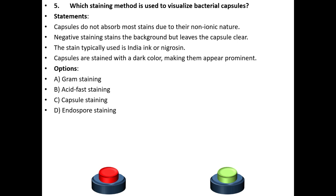Fifth question. Which staining method is used to visualize bacterial capsules? Statements: Capsules do not absorb most stains due to their non-ionic nature. Negative staining stains the background but leaves the capsule clear. The stain typically used is Indian ink or nigrosin. Capsules are stained with a dark color making them appear prominent.